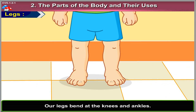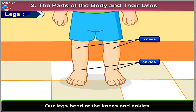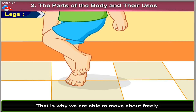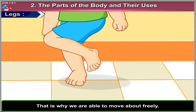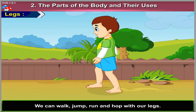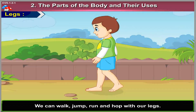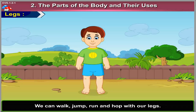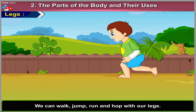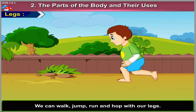Legs. Our legs bend at the knees and ankles. Toes of the feet can bend too. That is why we are able to move about freely. We can walk, jump, run, and hop with our legs.